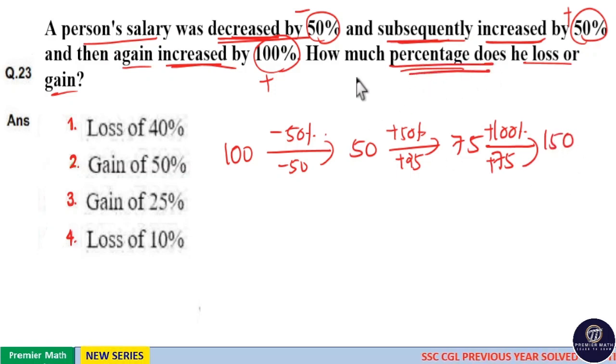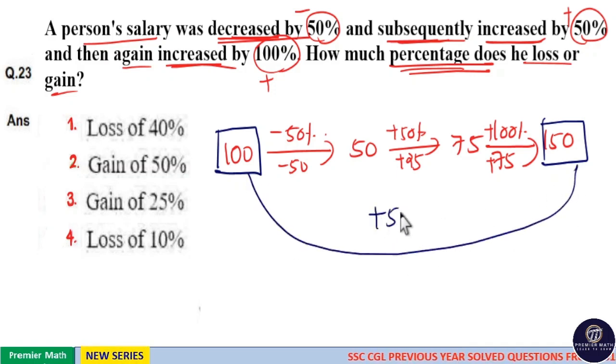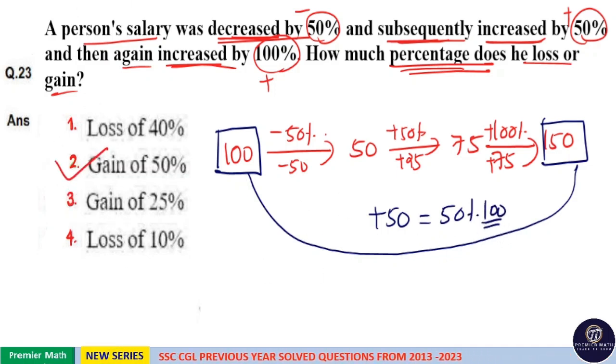Now how much is the percentage loss or gain? Here 100 is the initial salary and 150 is the final salary. That is increment is equal to 50 rupees. 50 rupees means 50%, 50% of 100 is 50 rupees. So 50% gain means option 2 is your answer.